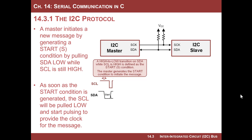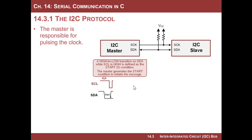A master initiates a new message by generating a start bit. The start bit is created by pulling SDA low before the clock. Then a little bit later, it pulls the clock low. From then on, everyone sees that the clock has gone low and knows a master is initiating a message. From that point, the master pulses the clock throughout the rest of the message.